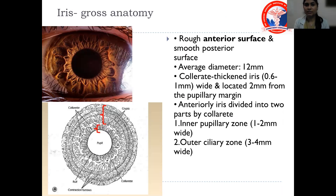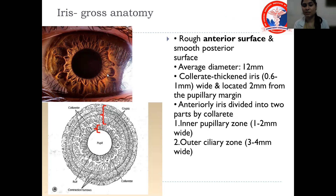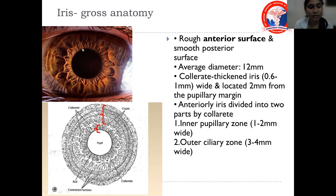The gross anatomy of the iris: it has two surfaces — the anterior and the posterior. The anterior surface is rough, and the posterior surface is smoother. The average diameter of the iris is 12 mm. The collarette is thickened iris, 0.6 to 1 mm wide, located 2 mm from the pupillary margin. Anteriorly, the iris is divided into two parts by the collarette: the inner pupillary zone (1 to 2 mm wide) and the outer ciliary zone (3 to 4 mm wide).